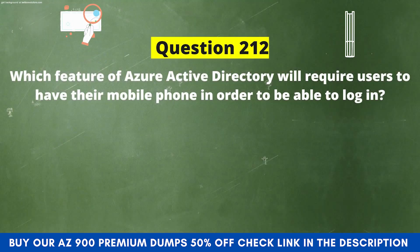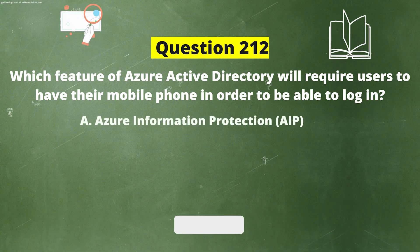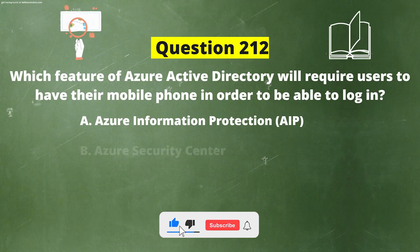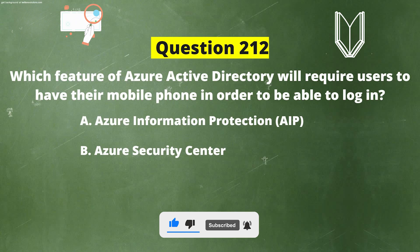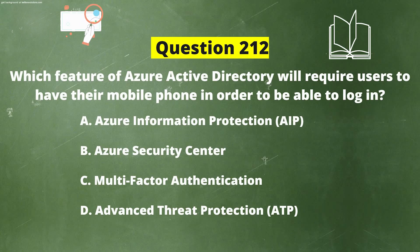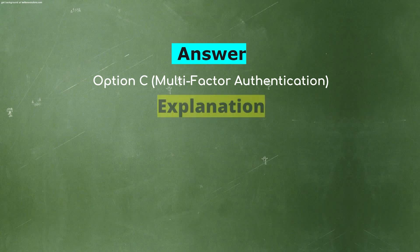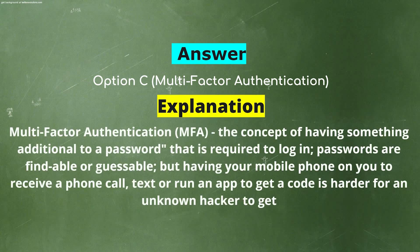Next question: Which feature of Azure Active Directory requires users to have their mobile phone in order to log in? Option A: Azure Information Protection (AIP). Option B: Azure Security Center. Option C: Multi-Factor Authentication. Option D: Advanced Threat Protection (ATP). The correct answer is Option C, Multi-Factor Authentication. MFA is the concept of having something additional to a password required to log in. Passwords are findable or guessable, but having your mobile phone to receive a call, text, or app code is much harder for an unknown hacker to obtain.